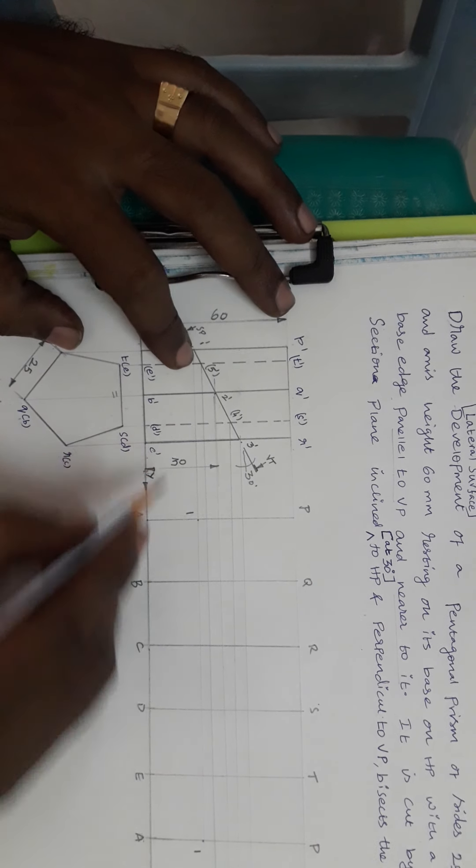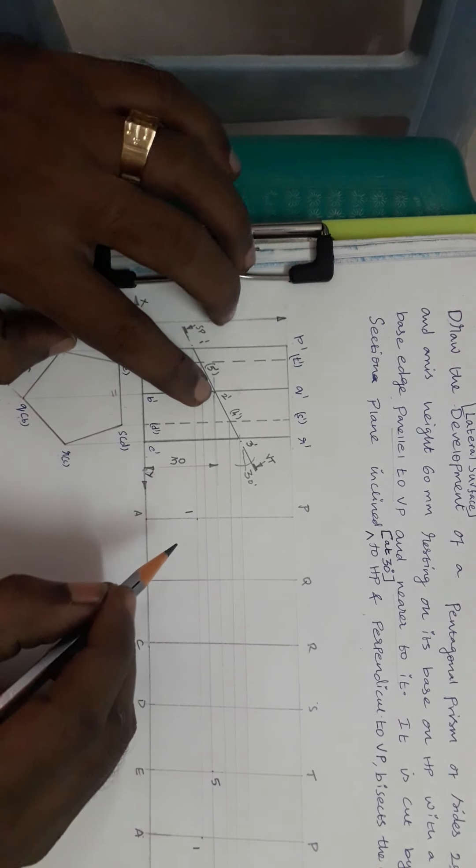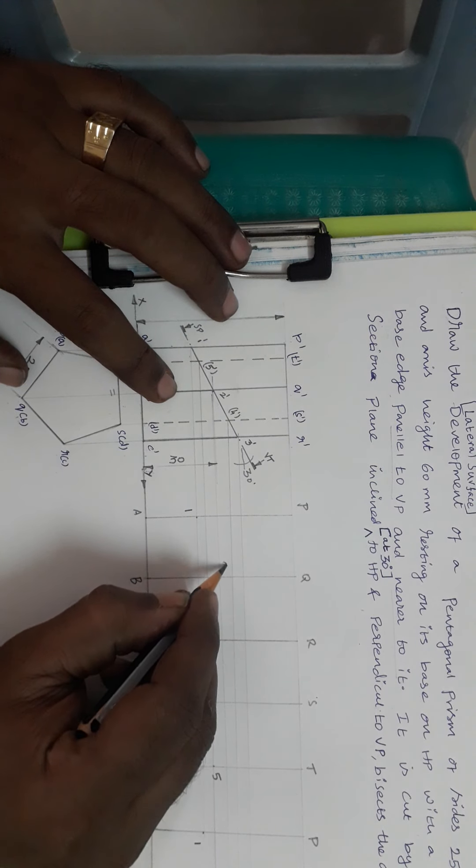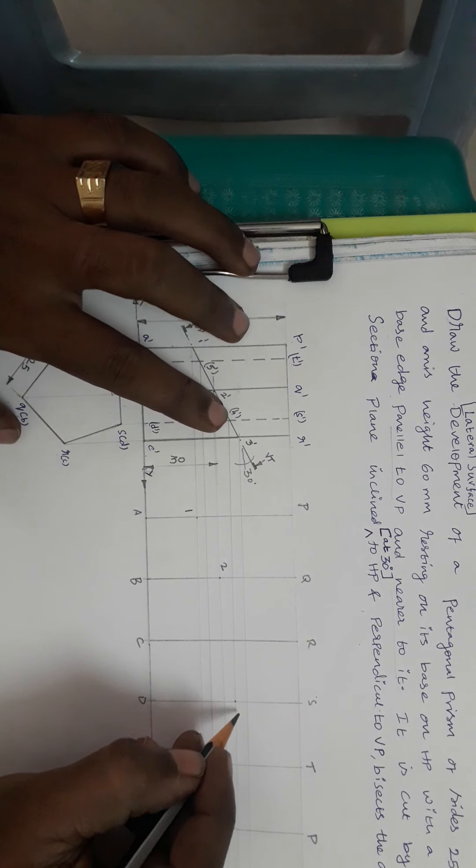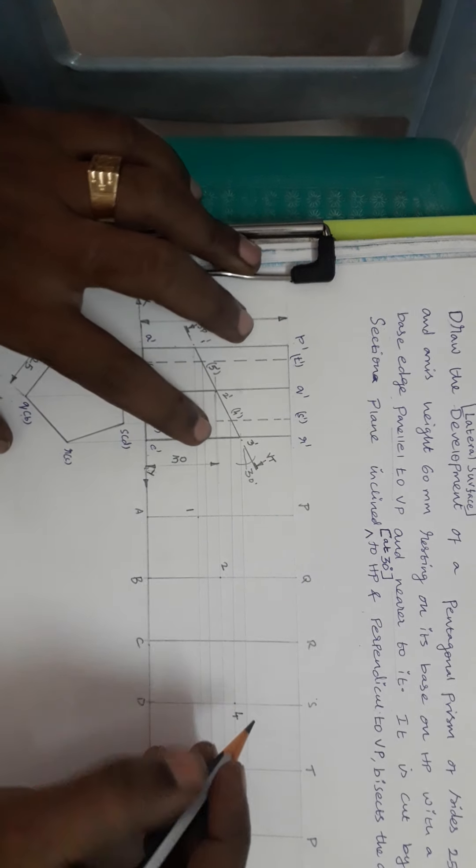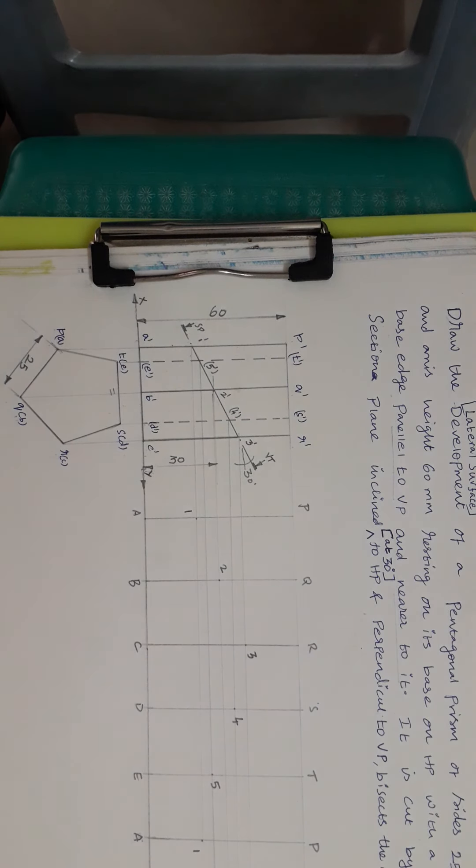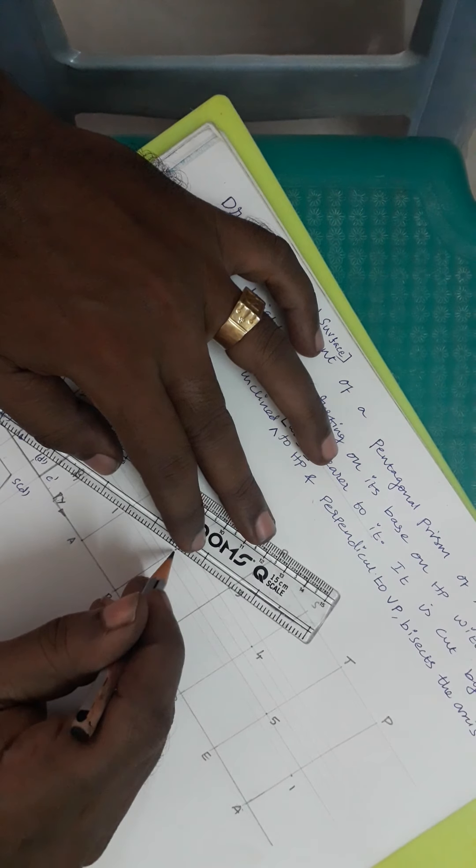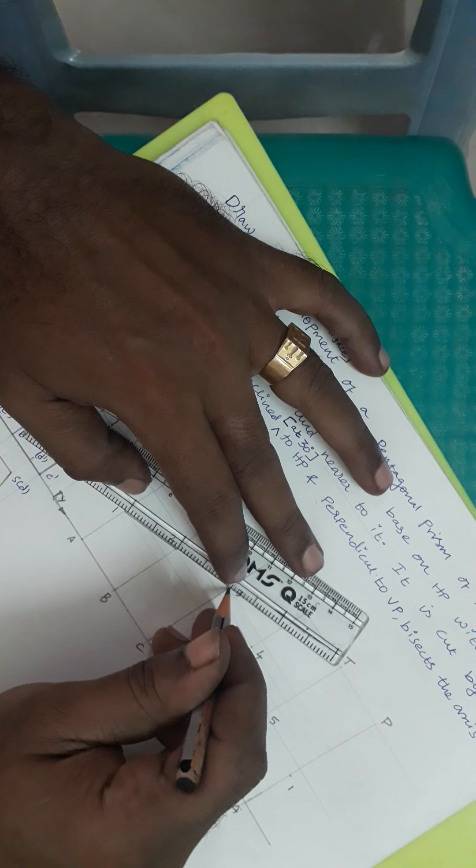5 is on TE. So this is TE. I am marking 5. 2 is on QB. 4 is on SD. 3 is on RC. I have marked all these points. And though it is a prism, I will join all the points with scale. Using scale I will join all the points 1, 2, 3, 4.